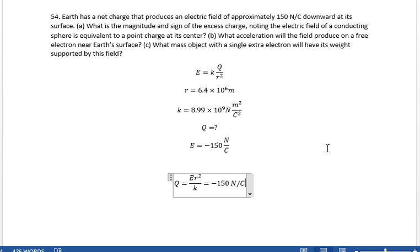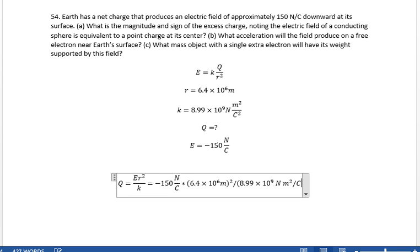It's negative. And we're going to multiply by 6.4 times 10 to the 6th meters squared and divide by 8.99 times 10 to the 9th newtons meter squared per coulomb squared.